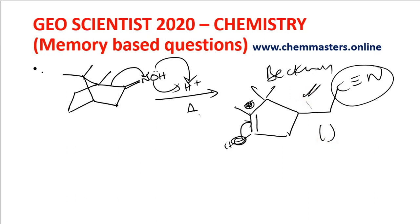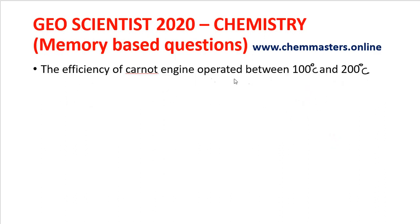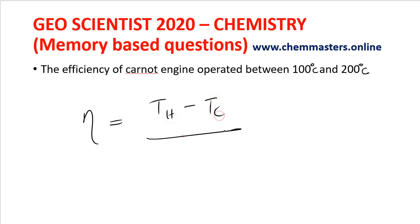Next question: the efficiency of a Carnot engine operating between 100°C and 200°C. The efficiency of a Carnot engine is given by the formula η = (T_H - T_L) / T_H. From that you can get the answer and you will see the option in the examination.